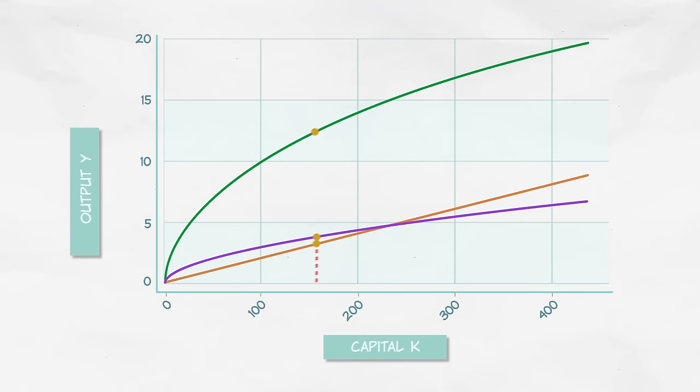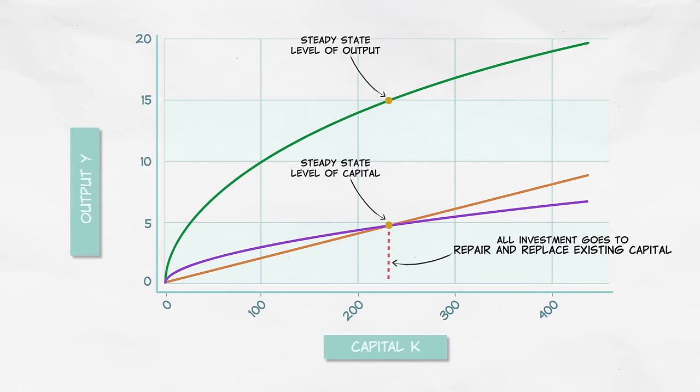In our previous videos, we showed how capital accumulation can generate growth in the short run. But in the long run, we always end up at a steady state where all of investment is used to make up for depreciation.